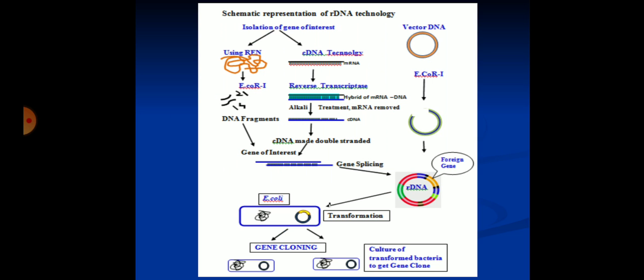This is the schematic representation of rDNA technology. The isolation of the gene of interest is done either by genomic library or cDNA technology. The vector DNA is treated with REN like EcoR1 to cut it open, and the gene of interest with staggered cuts is introduced into the cut-open plasmid to create rDNA. The rDNA is introduced into bacteria by different methods to bring about transformation. The transformed bacteria are screened, selected, and cultured in a culture medium to achieve gene cloning.